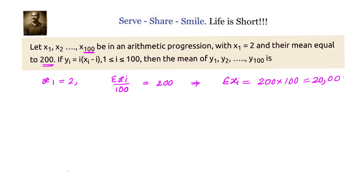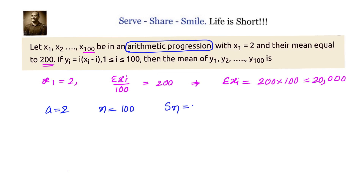Let us come back to arithmetic progression and identify the known values. x1 is our first term 'a'. The number of terms n is 100, and Sn is 20,000. Using these, let us find the common difference of this arithmetic progression.